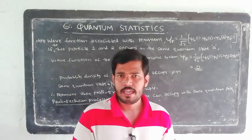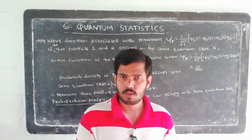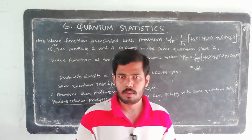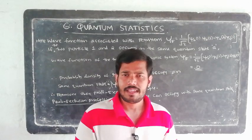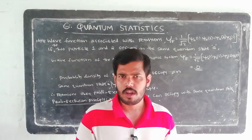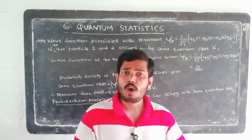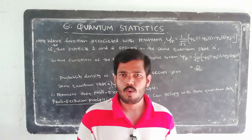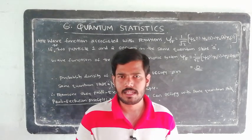We have quantum numbers: the principal quantum number, the magnetic quantum number, and the spin quantum number. In quantum mechanics, no two fermions can have all quantum numbers equal — that is the Pauli exclusion principle.